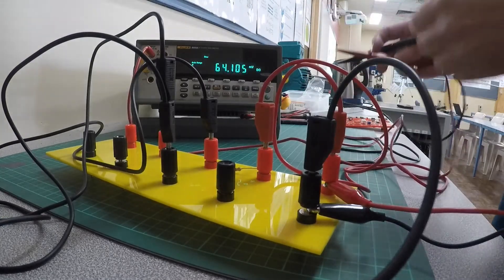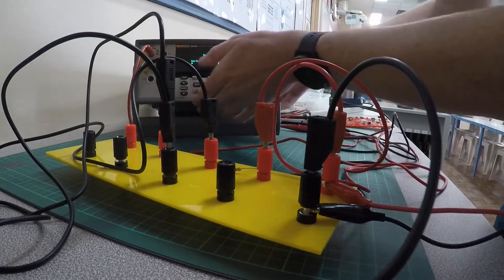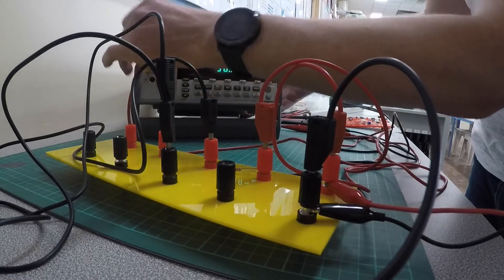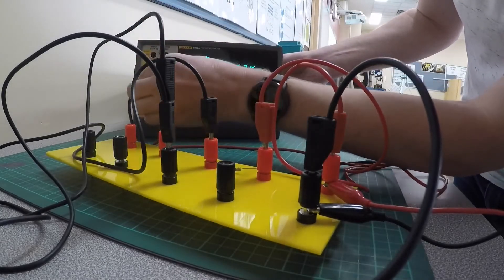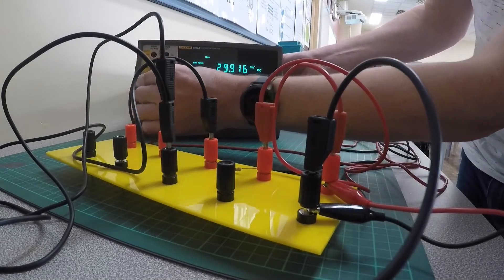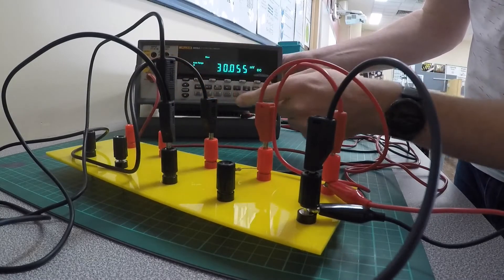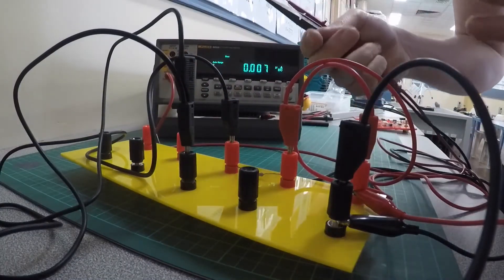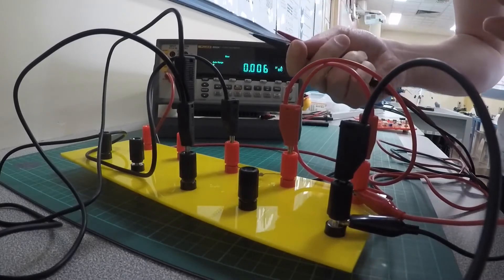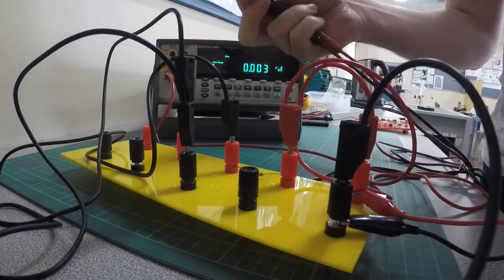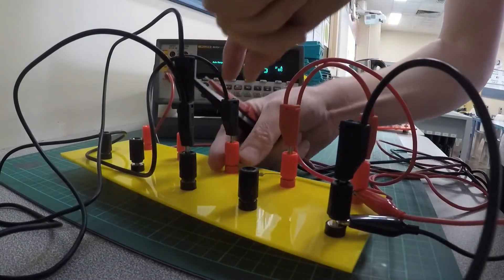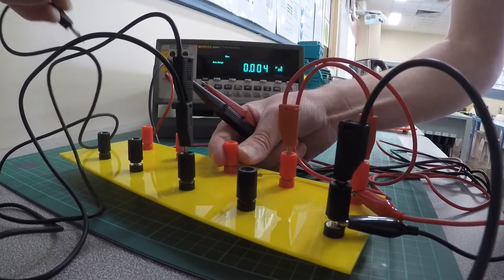Now to measure current, what we have to do is change our multimeter to amps. The common stays the same, and we have to break the circuit to measure this. So just for simplicity, I'm going to take this one out because it's the closest one to me.